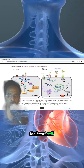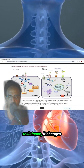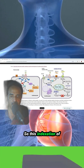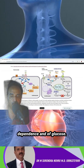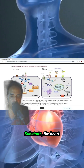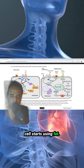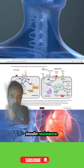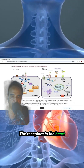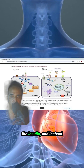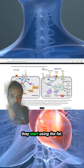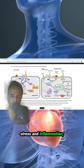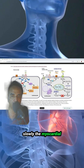During insulin resistance, the heart cell changes from glucose metabolism to fat metabolism. This shift — from dependence on glucose substrate to fat utilization — happens because of high insulin resistance. The receptors in the heart cells fail to respond to insulin, so instead of using glucose, they start using fat. This leads to lipid peroxidation, oxidative stress, and inflammation, and slowly myocardial cell death occurs.